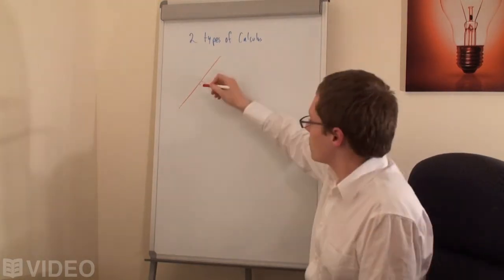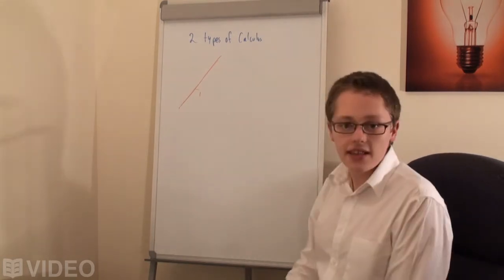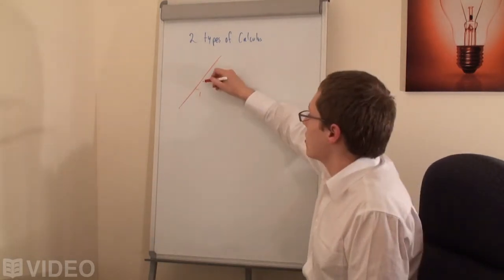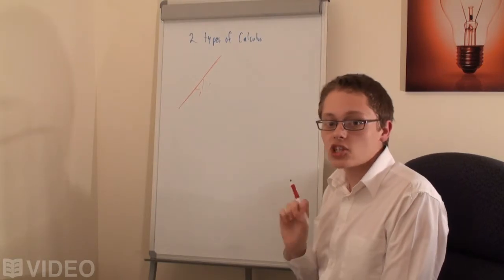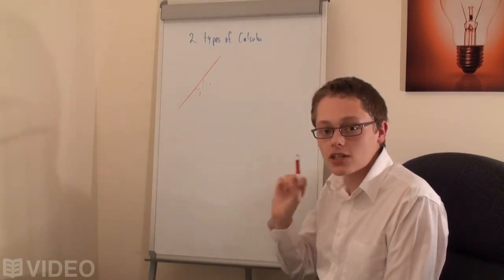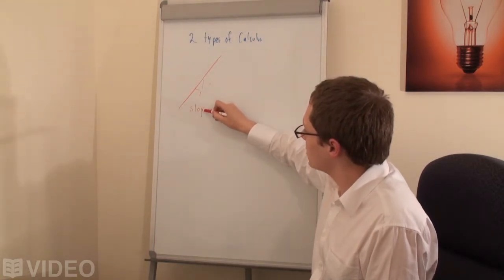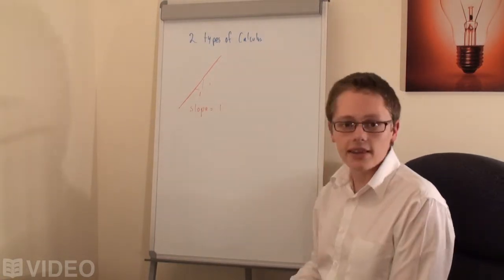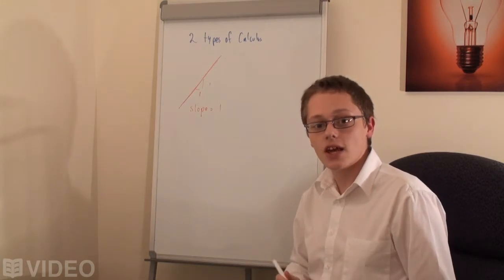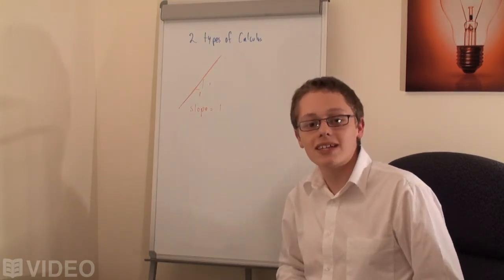For every increase of 1 in x, we may have an increase of 1 in y. There is a change in x relative to y. So, we can say that the slope of this function is equal to 1. And this is where we make that fundamental link to calculus.